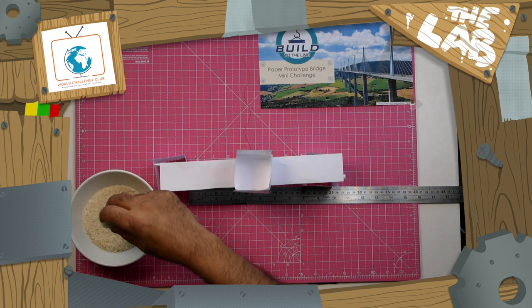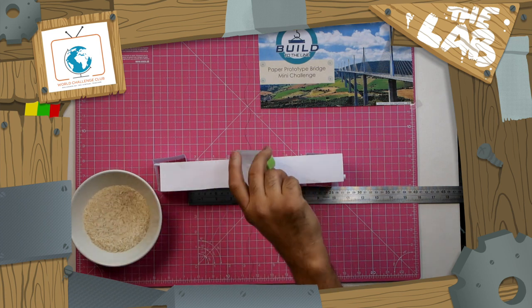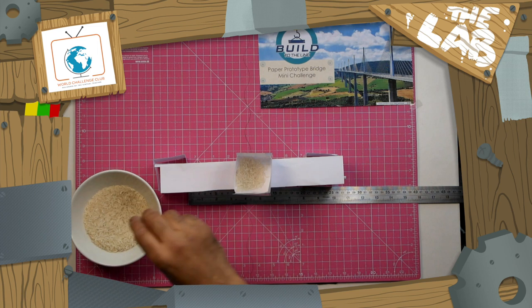Place your rice container or box in the middle of the deck of the bridge. Use the bottle cap and rice to fill it up. Each cap is worth about five grams of mass or weight.